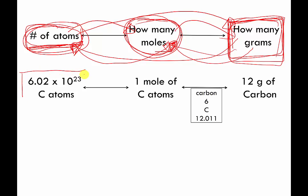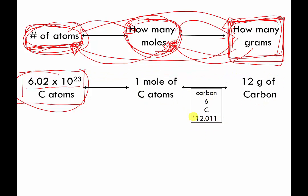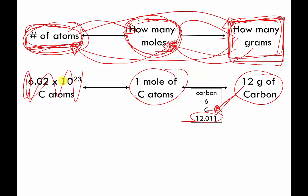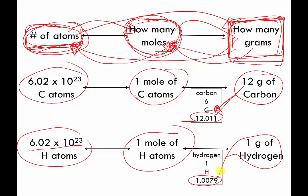For example: if you have 6.02×10²³ carbon atoms, that's one mole of carbon atoms. Look up carbon in the periodic table — 12.011 — so one mole of carbon atoms weighs about 12 grams. You can do this in reverse: if I tell you I have 12 grams of carbon, you look up that number, see it matches one mole, and conclude you have 6.02×10²³ carbon atoms. You can do this for any element — for hydrogen, 6.02×10²³ hydrogen atoms is one mole, which weighs about one gram.